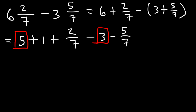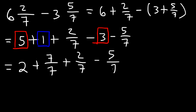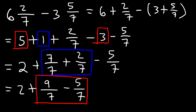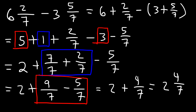We can combine 5 minus 3 to get 2. Now we change the borrowed 1 into 7 over 7, since 7 divided by 7 is 1. Then we combine the fractions: 7 over 7 plus 2 over 7 is 9 over 7. Finally, 9 over 7 minus 5 over 7 is 4 over 7. So we have 2 plus 4 over 7, which means the final answer is 2 and 4 sevenths.